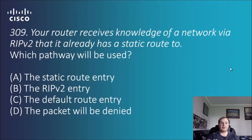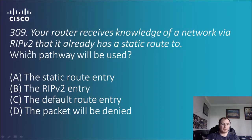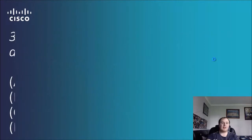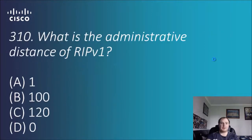Question 309: your router receives knowledge of a network via RIP version 2, but it already has a static route to it — which pathway will be used? The static route entry, the RIP v2 entry, the default route entry, or the packet will be denied? RIP version 2 has quite a high administrative distance number as opposed to static, which is quite low, so the static route will take precedence. That's the answer.